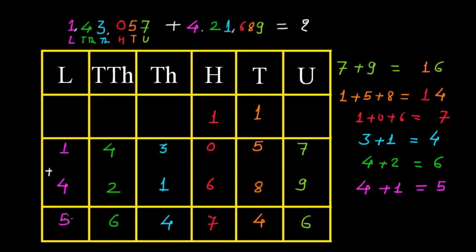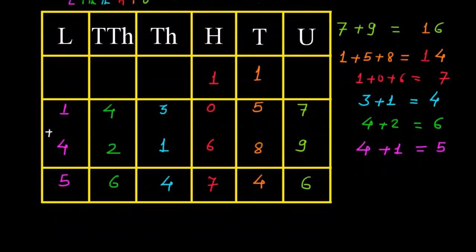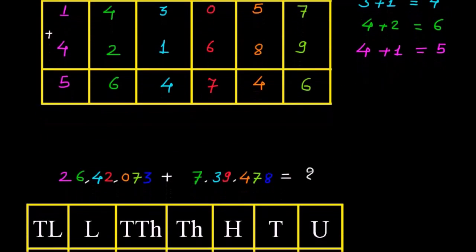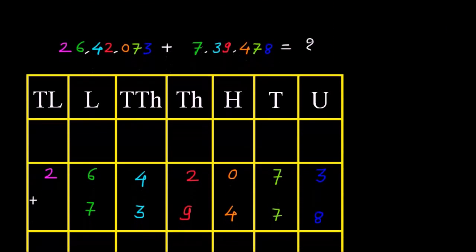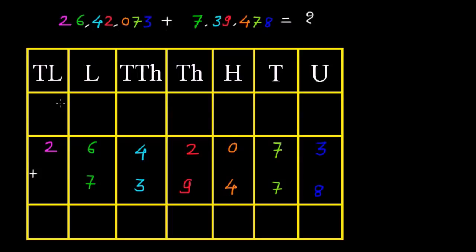So the answer is 5,64,746. Now let us take the 7-digit number. We have to apply the same method while doing the addition of 7-digit numbers. Here you can see that 26,42,073 plus 7,39,478. Already I have organized these numbers in a vertical fashion, so let us do the addition.